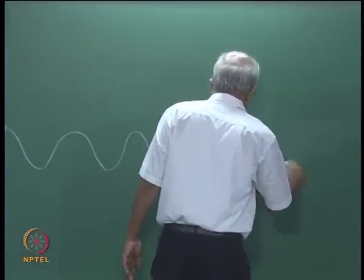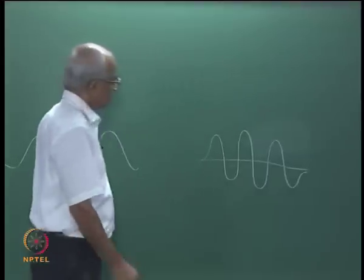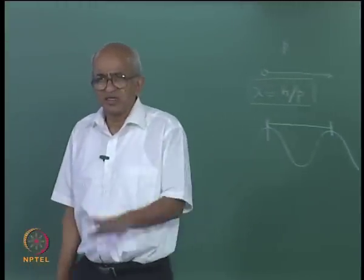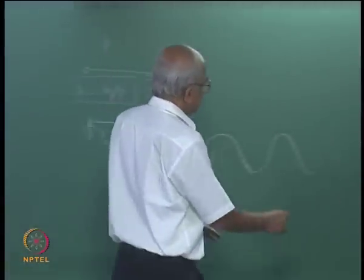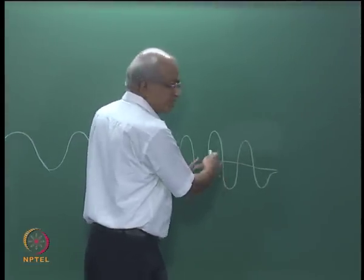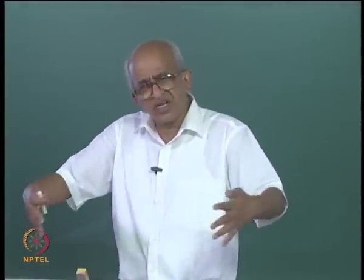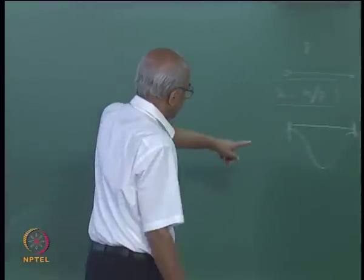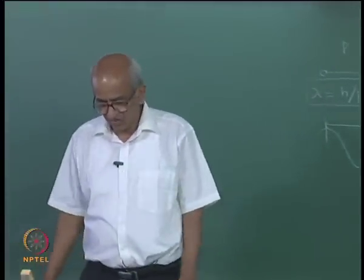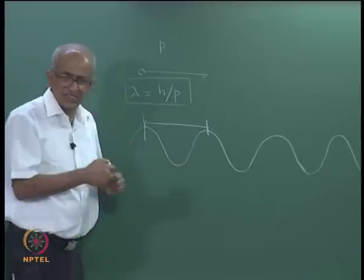On the other hand, if I had a wave of a different form — a localized wave — it is not possible to say precisely what the wavelength is. The wavelength is ill-defined for such a wave. In order to have a very well-defined wavelength, I should have a very long wave repeating periodically and sinusoidally.